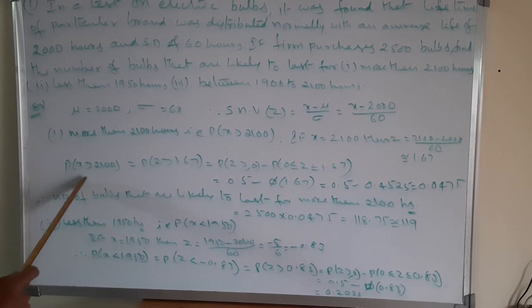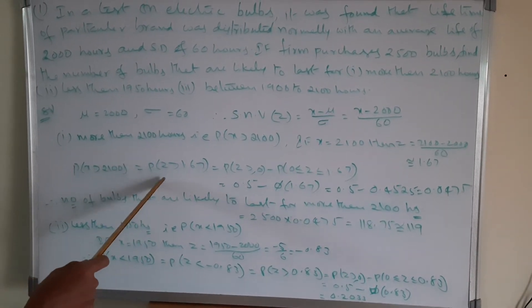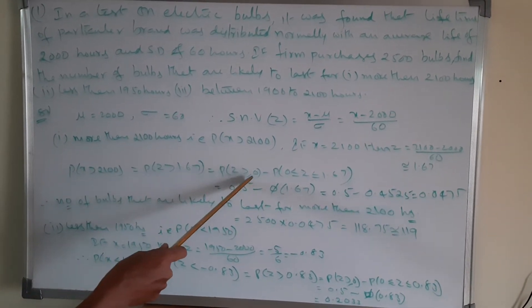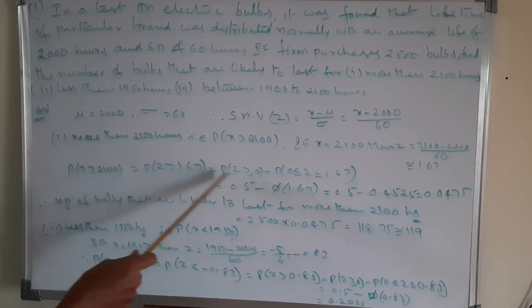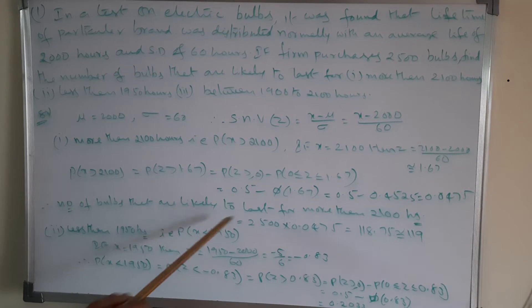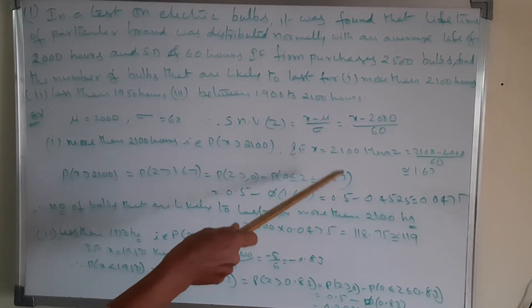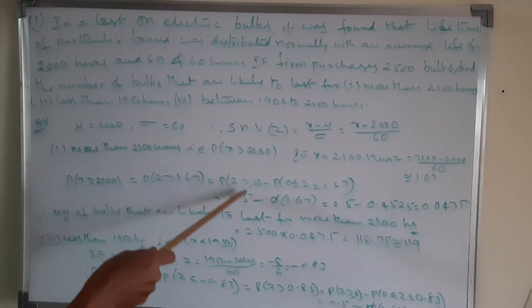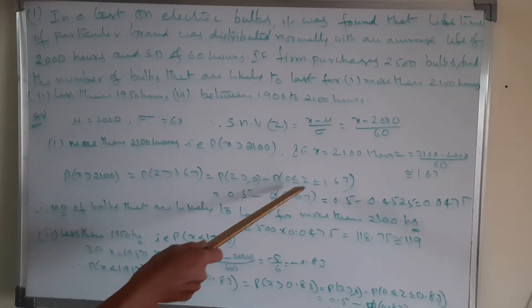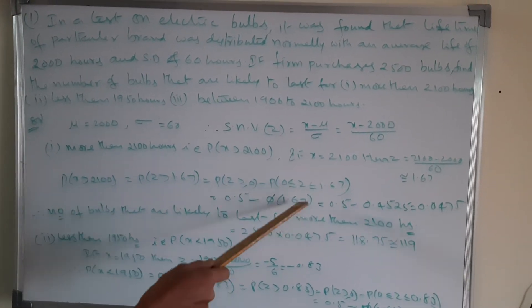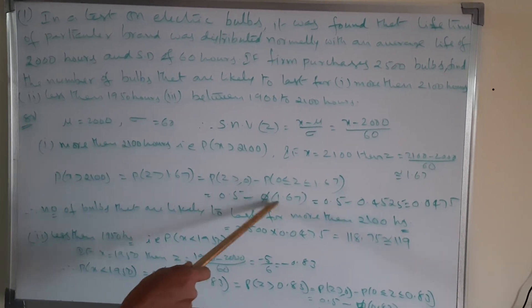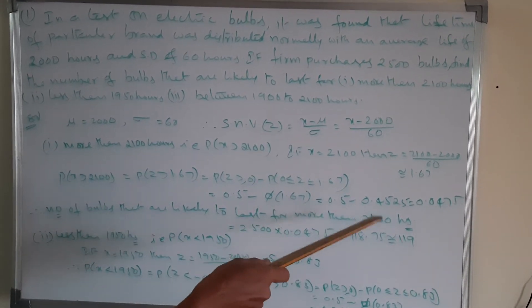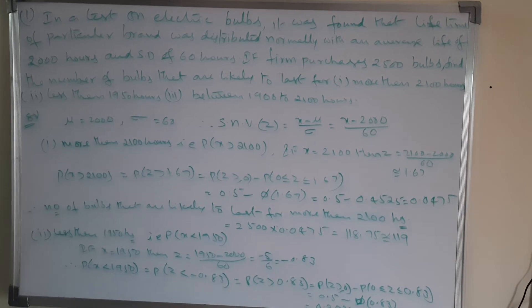Therefore P(x greater than 2100) equals P(z greater than 1.67). Writing in standard form: P(z ≥ 0) minus P(0 < z ≤ 1.67). P(z ≥ 0) by standard result is 0.5, and P(1.67) from the normal distribution table is 0.4525. Subtracting gives 0.0475.